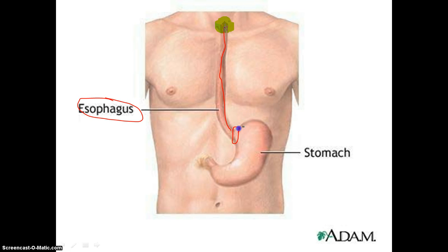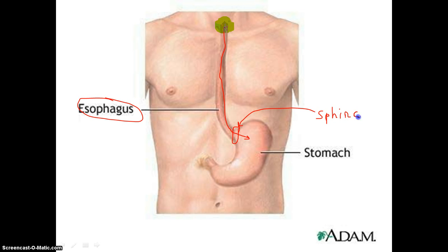The bolus will begin to travel down through our esophagus and it will go through a little sphincter right here. A sphincter is like a valve — it allows food to go in one way but doesn't allow it to come out the other way. That blocks off the food from going back up into the esophagus, though sometimes that can work in reverse, such as if you vomited.